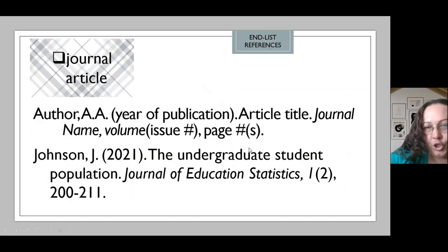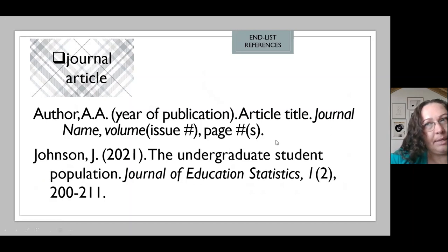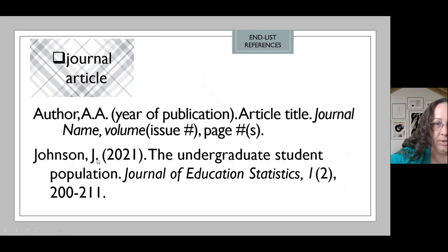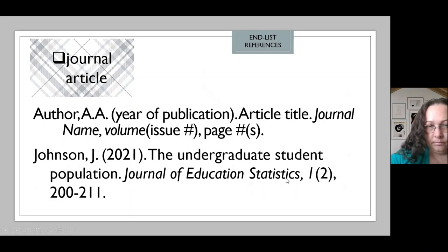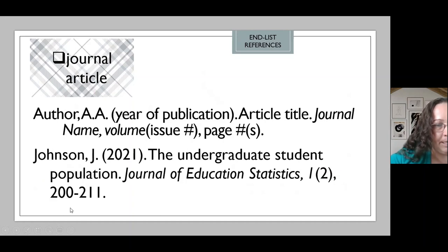Articles that appear in journals follow exactly the same structure as articles that appear in magazines. Therefore, we're going to have the information of the author, between parentheses, time of publication, the article — it is not italicized — the journal, which is italicized in title case, comma, volume, open parentheses, issue of this journal, close parentheses, comma, and the pages where this article appears in this particular journal.